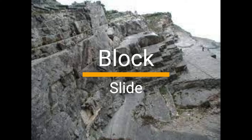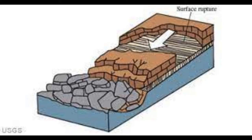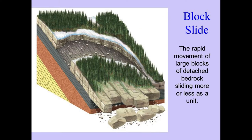A block slide is a type of landslide where a mass of rock or soil rapidly moves down a slope or cliff along a defined surface of weakness. It can be triggered by heavy rainfall, seismic activity, or changes in groundwater levels and poses a threat to infrastructure and human life. To reduce the risk, it is important to avoid building on steep slopes, stabilize slopes using retaining walls, and monitor slopes for signs of instability.